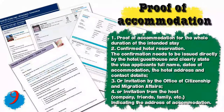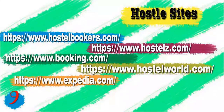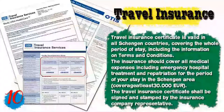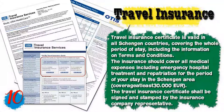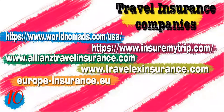If you don't have a hotel reservation, you will need an invitation from the Office of Citizenship and Migration Affairs, or an invitation from a host — which can be a company, friends, or family — indicating the address of accommodation. Some booking sites are mentioned that you can use to book your accommodation. Number ten, you will need a health insurance certificate. For Schengen countries, travel insurance is required and must cover the whole period of stay. It should cover all medical expenses including emergency hospital treatment and repatriation, covering at least 30,000 euros. The travel insurance certificate must be signed and stamped by the insurance company representative or be verifiable online.